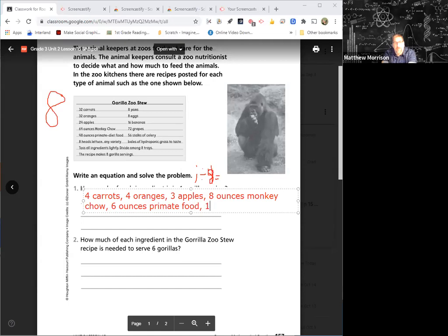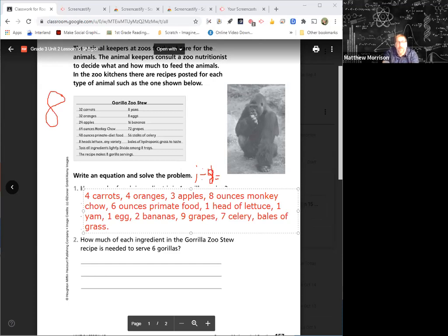Eight divided by one is one head of lettuce. And we'll go to the next one. We have eight divided by one again: one yam, one egg, two bananas, 72 divided by eight is nine grapes, 56 divided by eight is seven celery. And it doesn't tell us how many bales, it's just bales of grass. We don't have to write down every single word that's up there. So this is how much one would make.